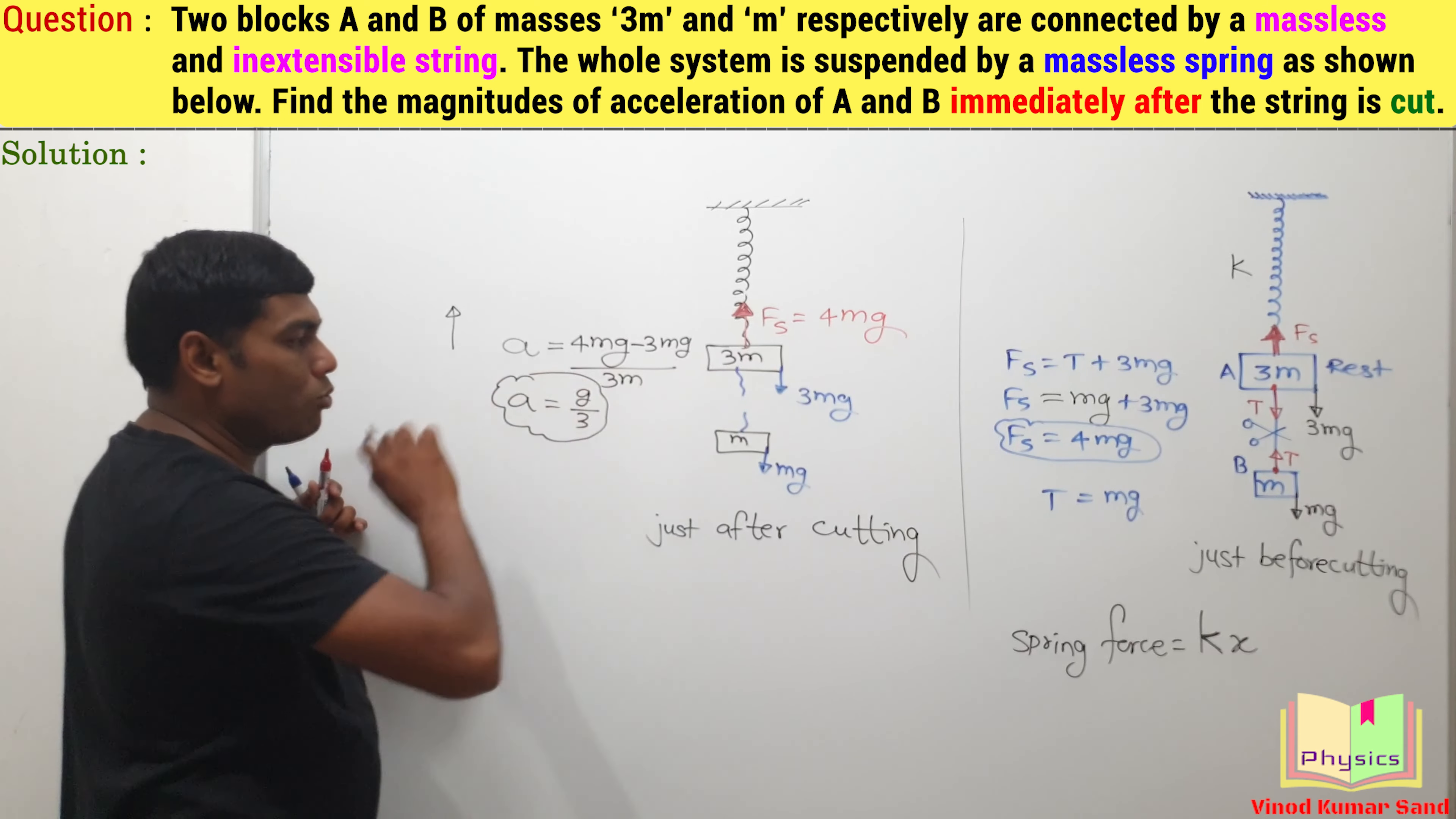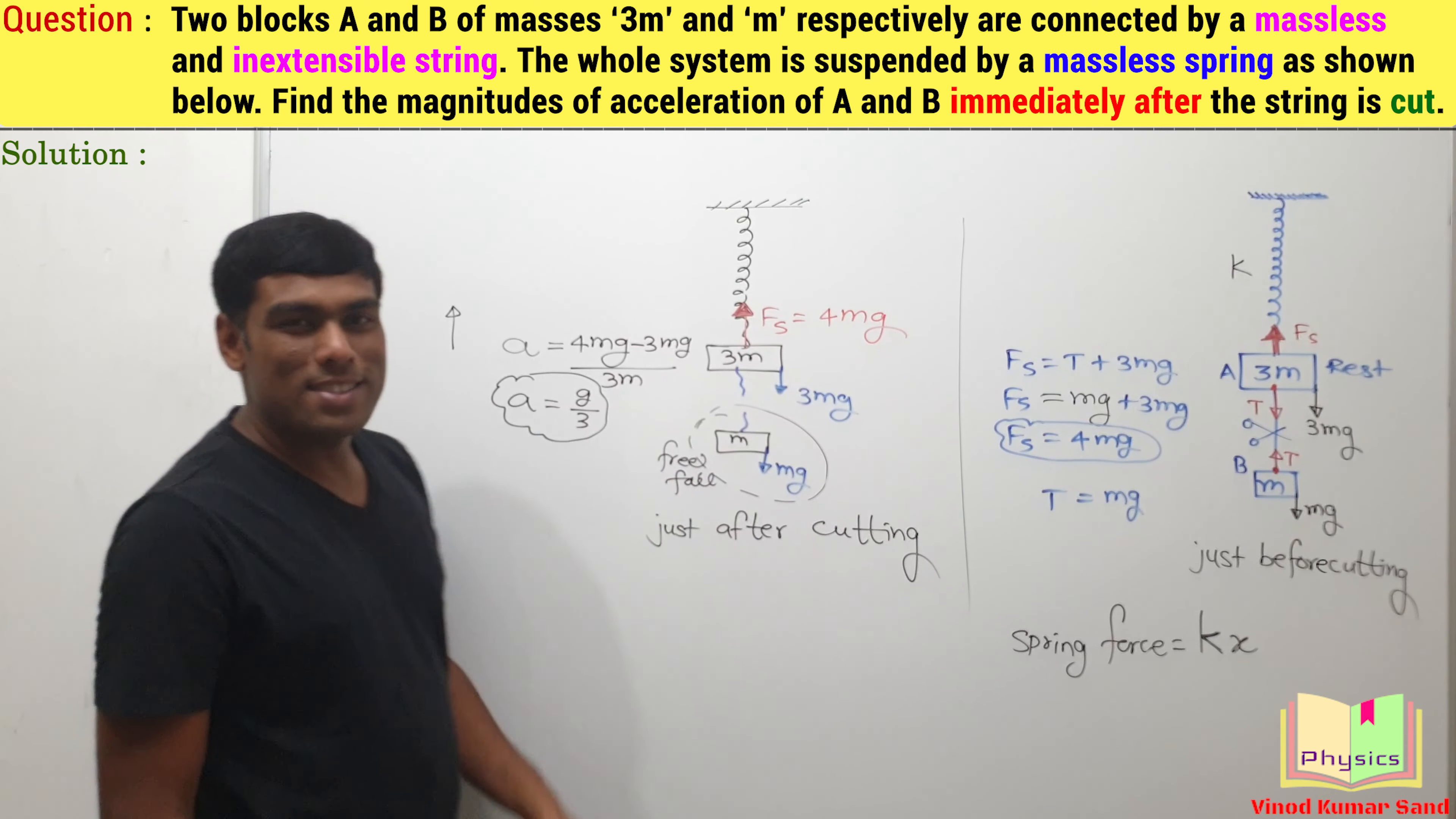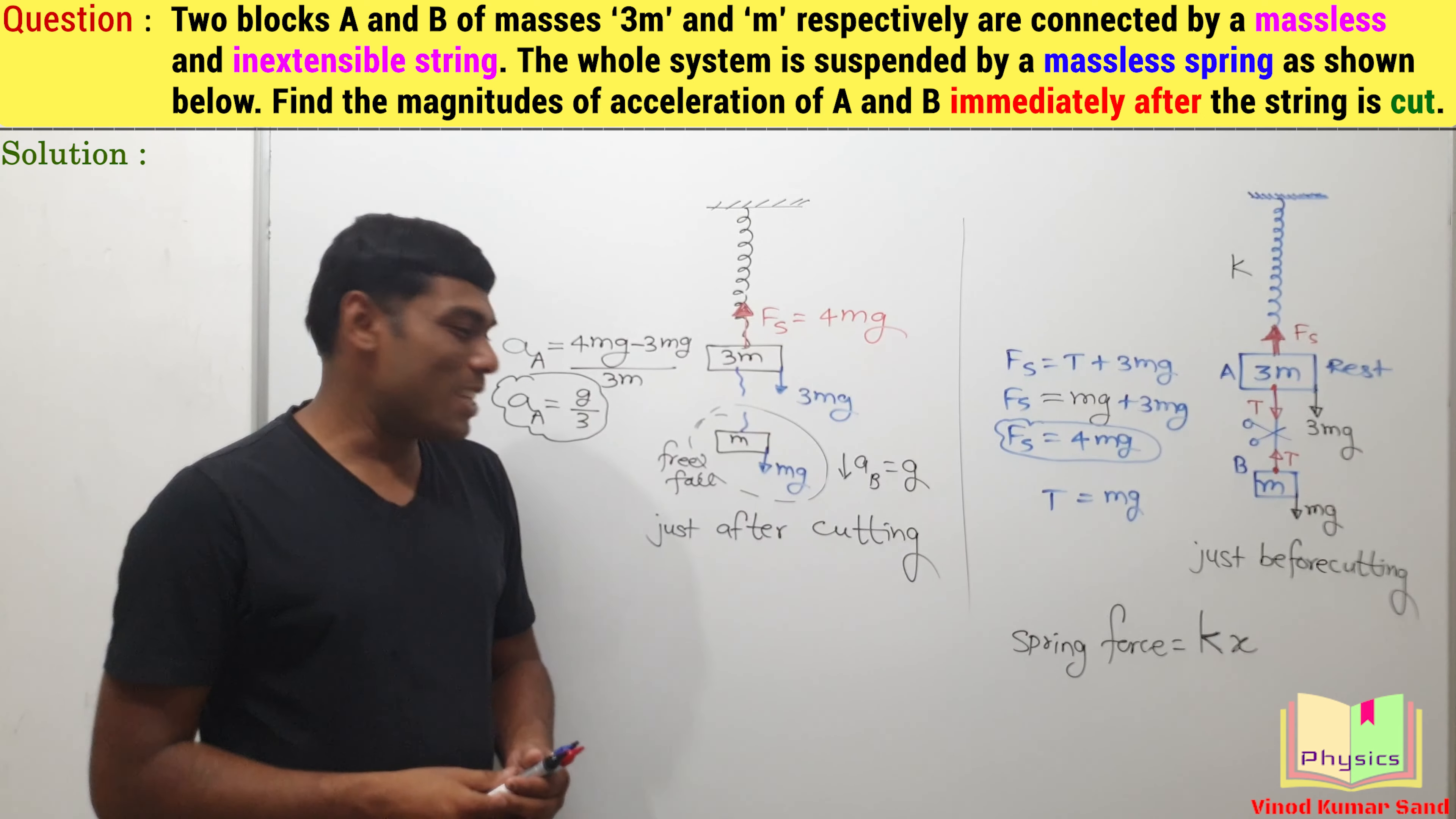Here is the first answer. Now if we look at this block, this block is in free fall. And for any body in free fall, its acceleration is equal to g. I hope you understood the answer.